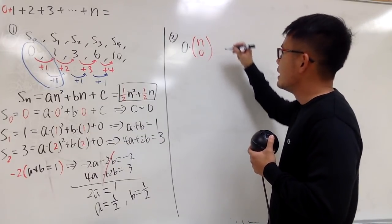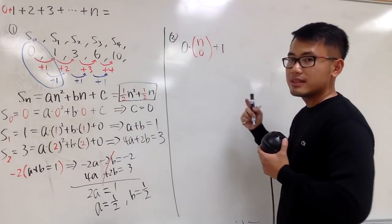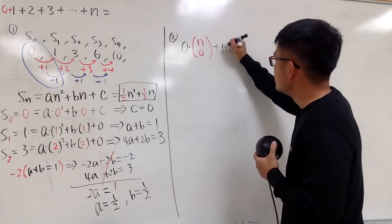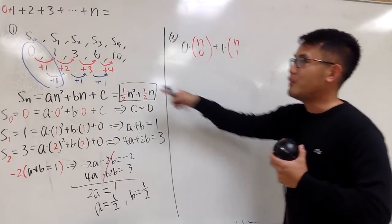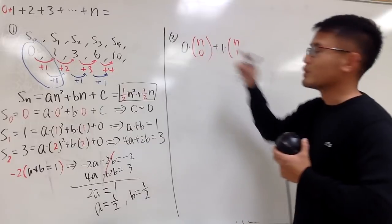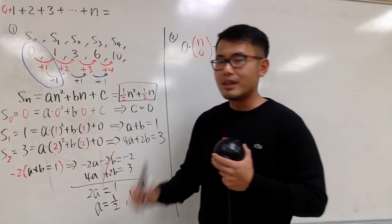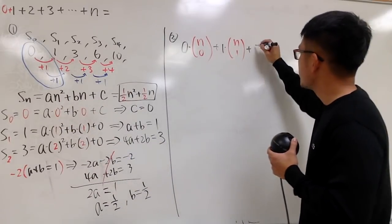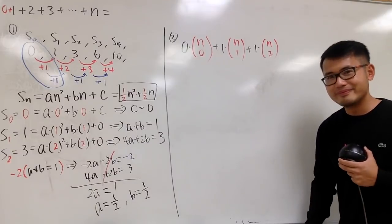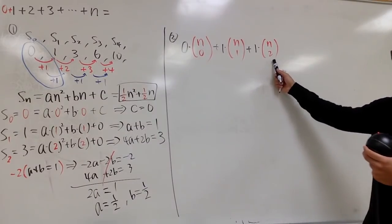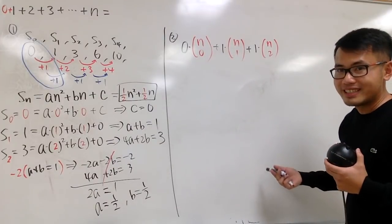I'll write this down. And then the next 1, at the second level, is multiplied by n choose 2. Why n choose 2? Because this is the second level. That's pretty much the work with the binomial coefficients.